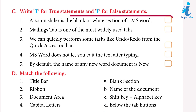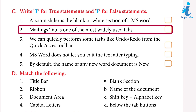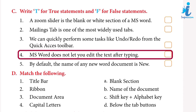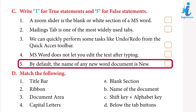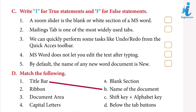Write T for true statements and F for false: one, a zoom slider is the blank or white section of MS Word — False; two, mailing tab is one of the most widely used tabs — False; three, we can quickly perform tasks like undo and redo from the Quick Access Toolbar — True; four, MS Word does not let you edit text after typing — False; five, by default the name of any new Word document is 'New' — False.